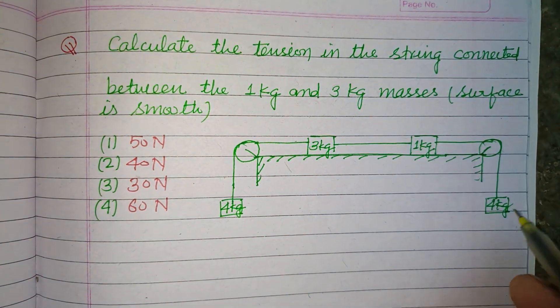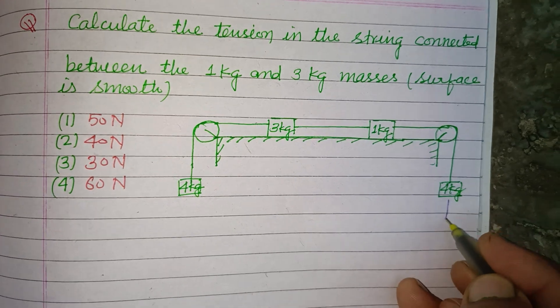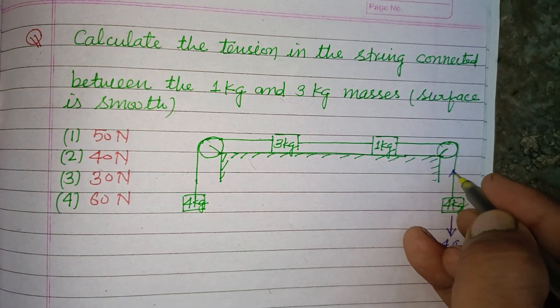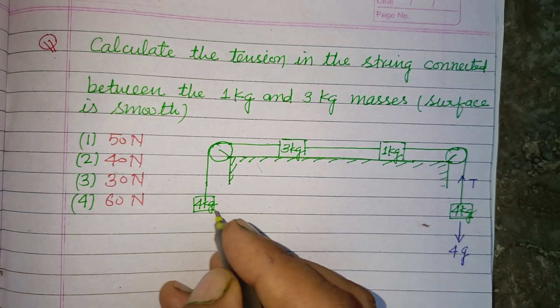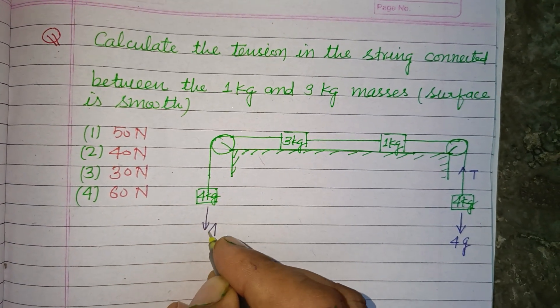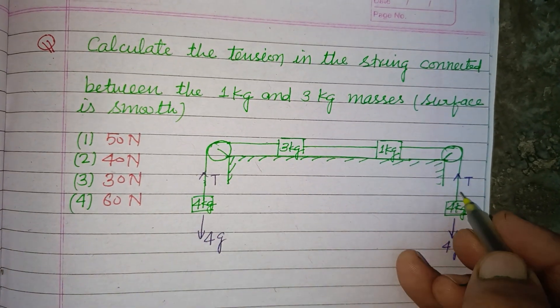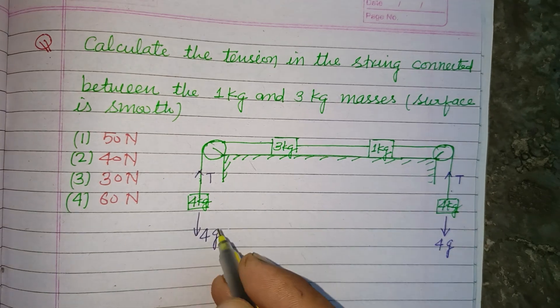So students, here is a 4 kilogram mass, so its weight works in the downward direction: 4g. Tension is T. Here also 4g. Since weight is the same, tension is also the same in these two strings.